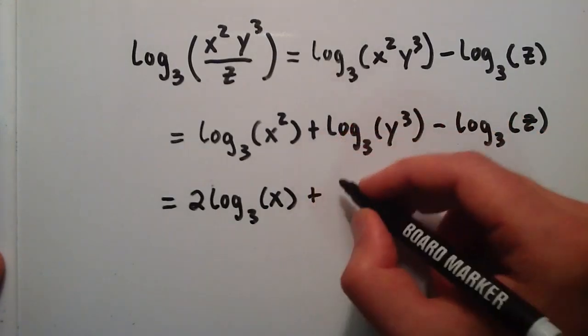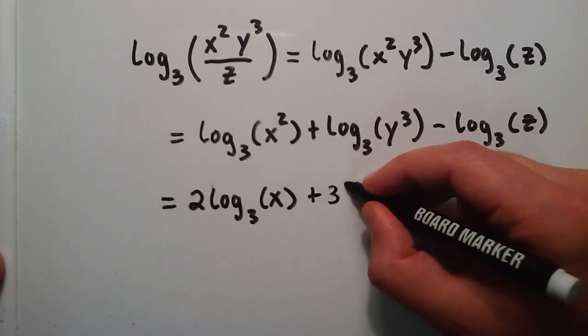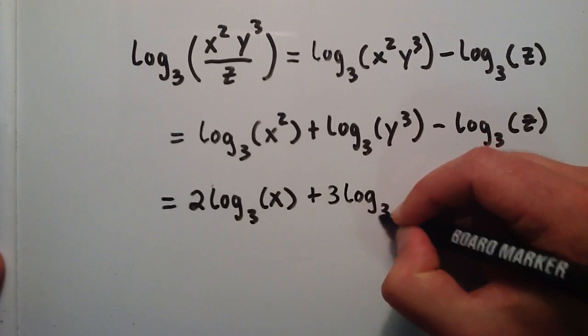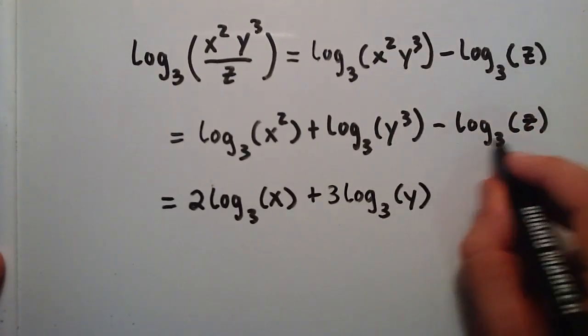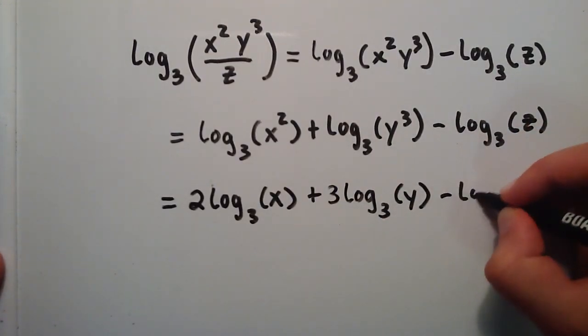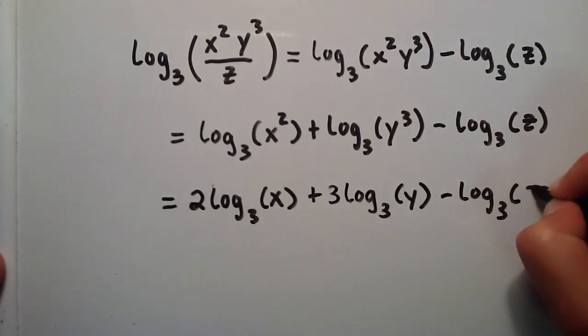And we're going to go ahead and do that to this guy. So we're bringing the 3 out front. This becomes 3 log base 3 of y and then this guy doesn't change, log base 3 of z.